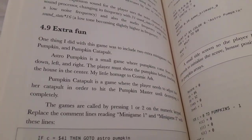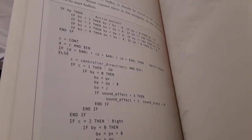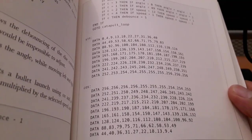Extra mini games: Astro Pumpkin and Pumpkin Catapult. Physics effects there. Tables for Sin and Cosine.